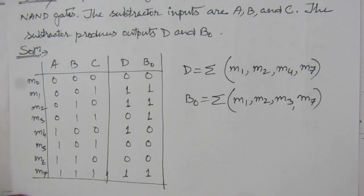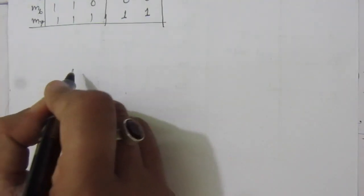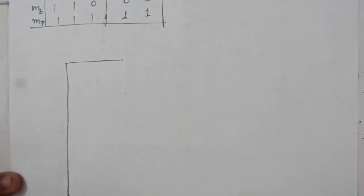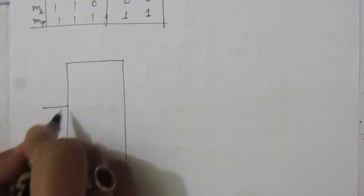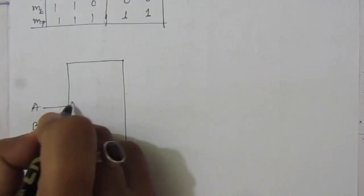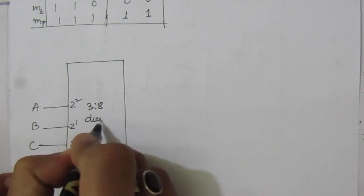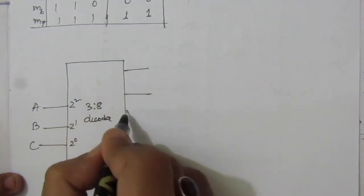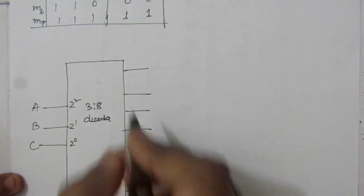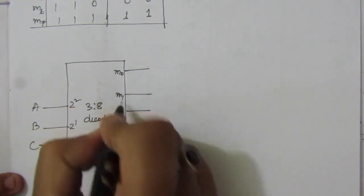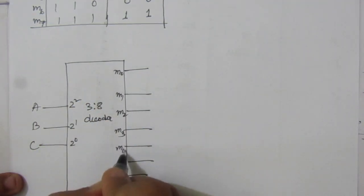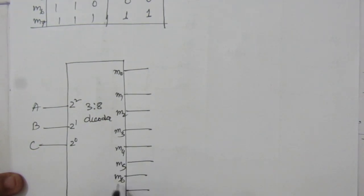So let us draw the 3-to-8 decoder, because we have 3 inputs and will have 8 outputs — 8 minterm outputs. The inputs are A, B, and C, corresponding to 2², 2¹, and 2⁰. This is the 3-to-8 decoder and it produces output lines M0, M1, M2, M3, M4, M5, M6, and M7.